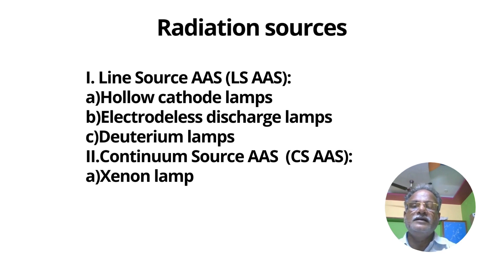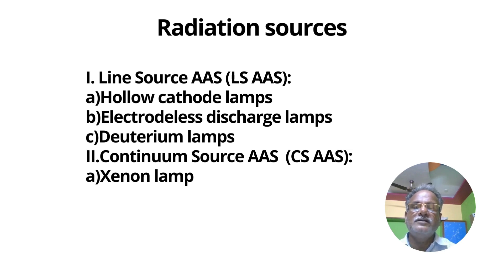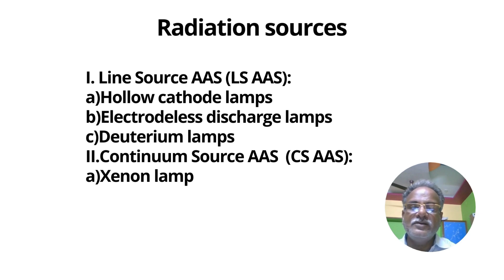Radiation sources. Line-source atomic absorption spectroscopy and continuum-source atomic absorption spectroscopy can be classified based on their radiation sources. Usually, hollow cathode lamps and electrodeless discharge lamps and deuterium lamps are used for line-source AAS. For continuum-source atomic absorption spectroscopy, xenon lamps are widely used.